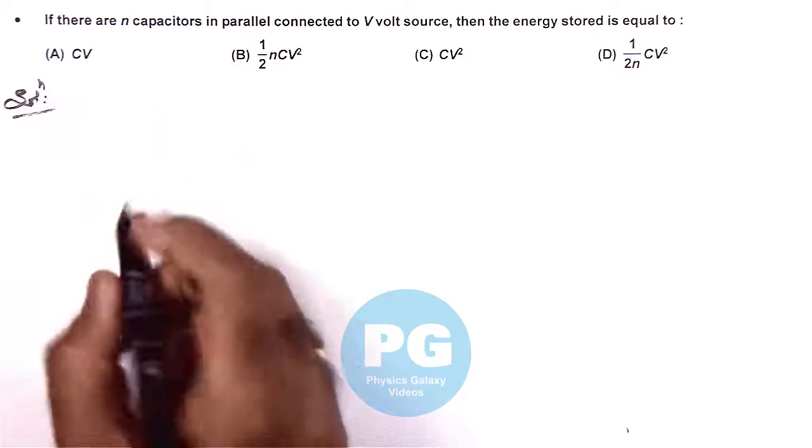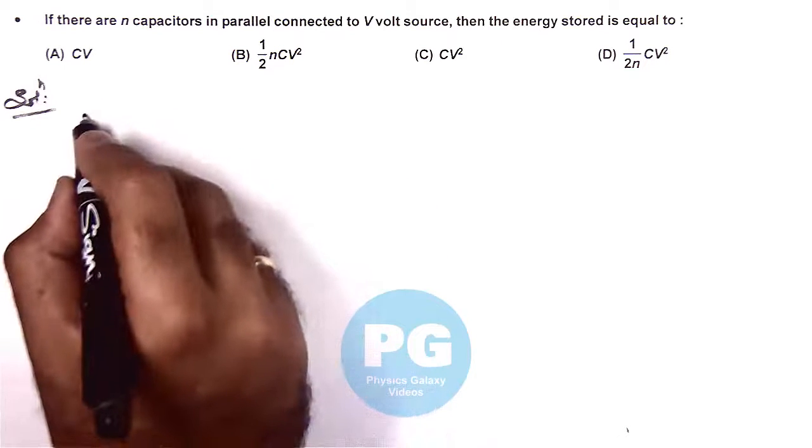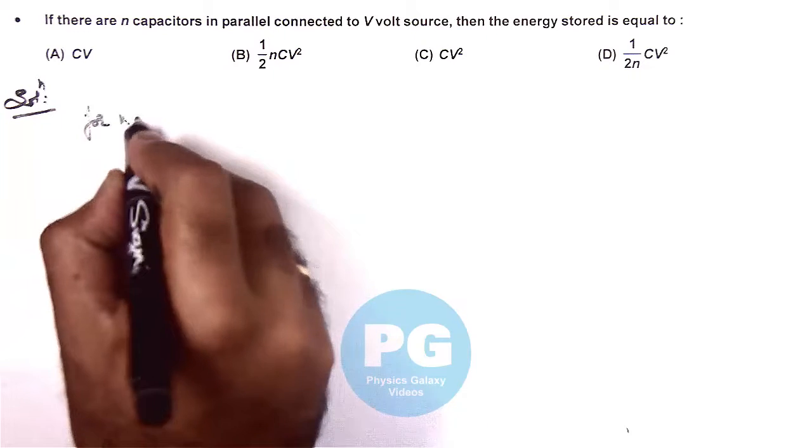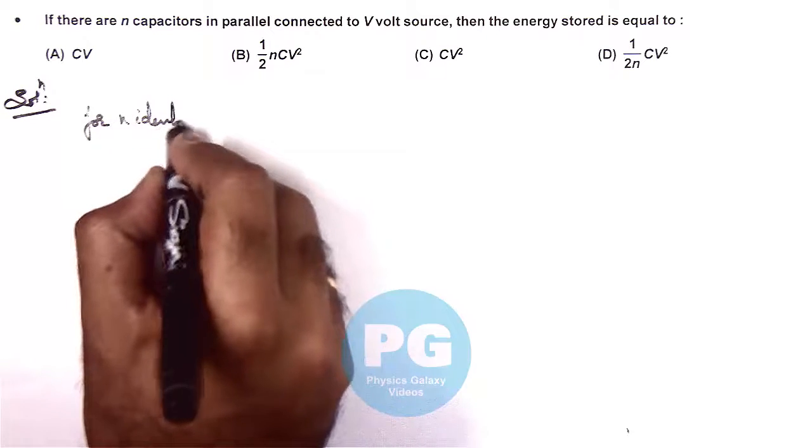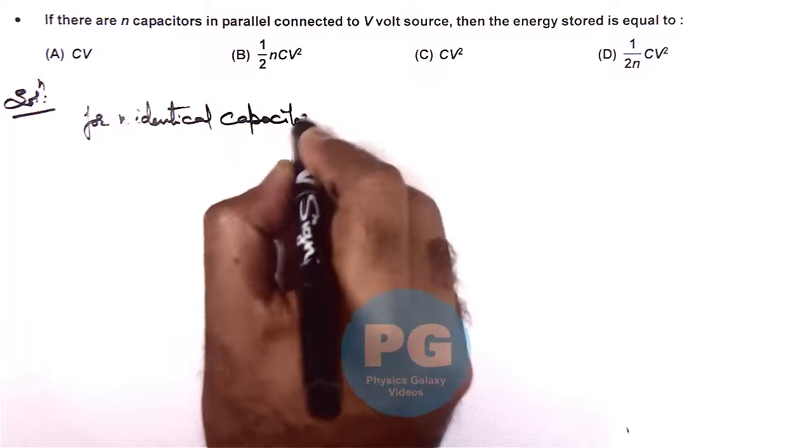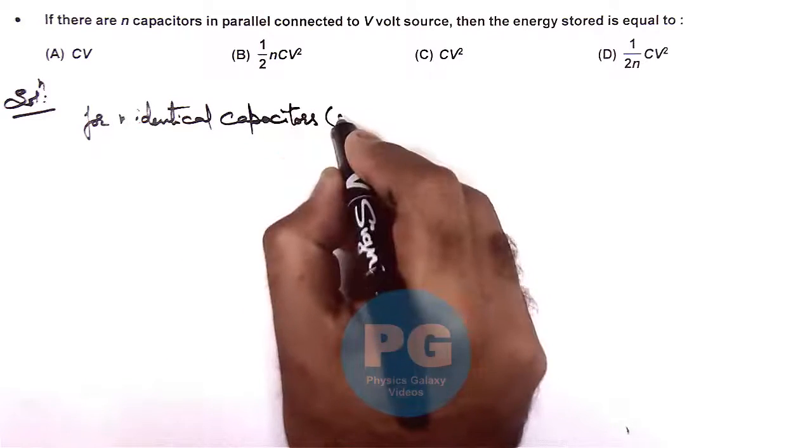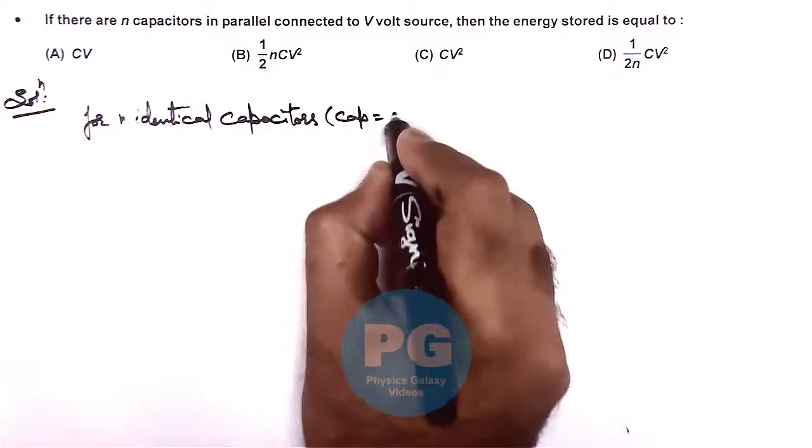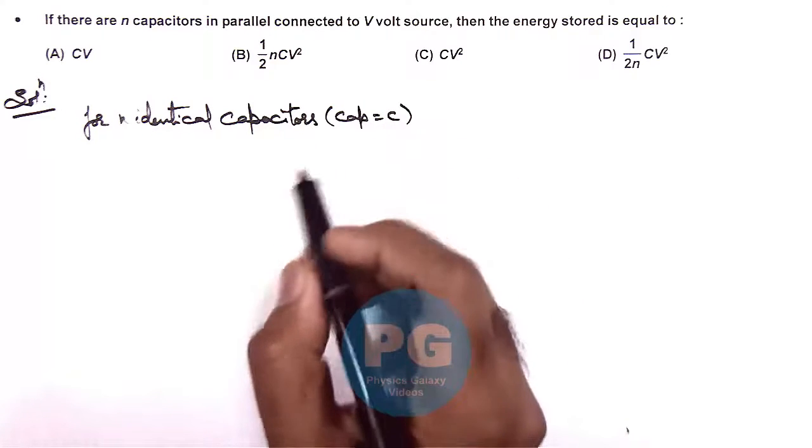In the solution we can directly write for N identical capacitors. If we consider the capacitance is equal to C for each of the capacitors.